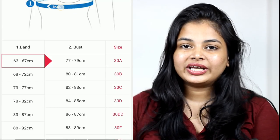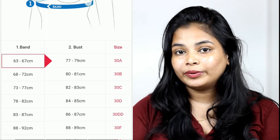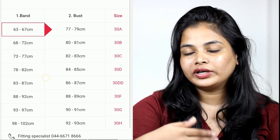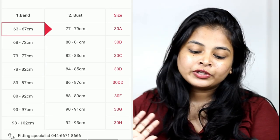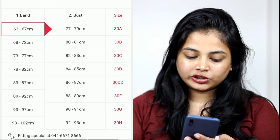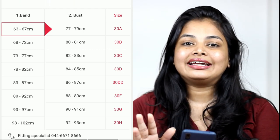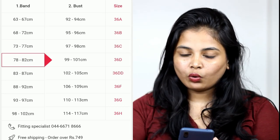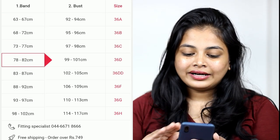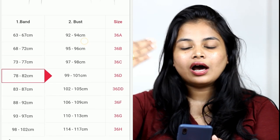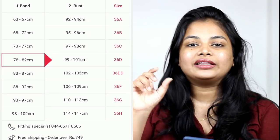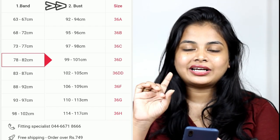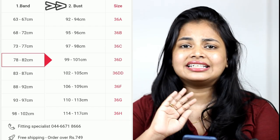If you have the centimeter side, you can check it in the video. For example, if you have 78 to 82 cm, you click on that range. Now you click on it. Then on the right side you find the bust measurement. Number two is the bust — you will see 95 to 96 cm, then 97 to 98 cm.